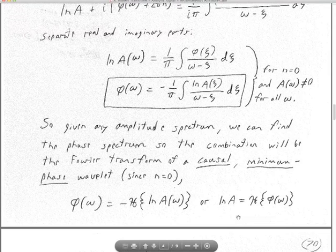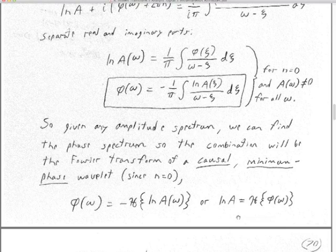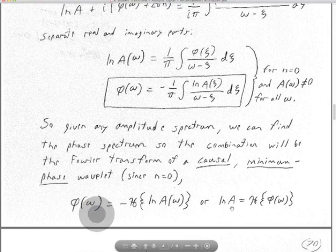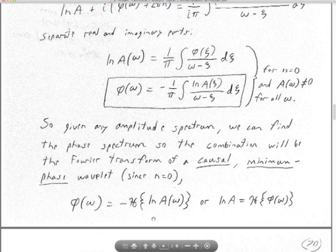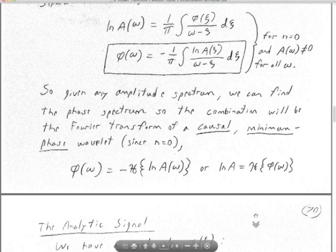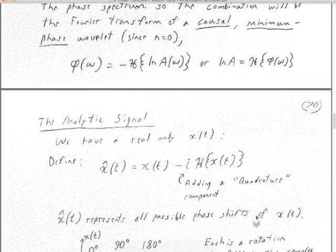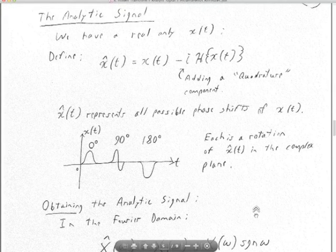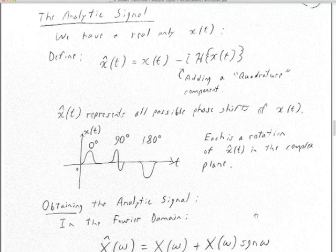There are some difficulties here, but the Hilbert transform is now pretty well known. Certainly in MATLAB or numerical recipes you'll find a Hilbert transform algorithm. You can derive the phase spectrum you need, combine that with the amplitude spectrum you've designed, and then invert that into a time-domain filter that you apply by convolution. The phase is minus the Hilbert transform of the log of the amplitude spectrum — quite a simple algorithm.